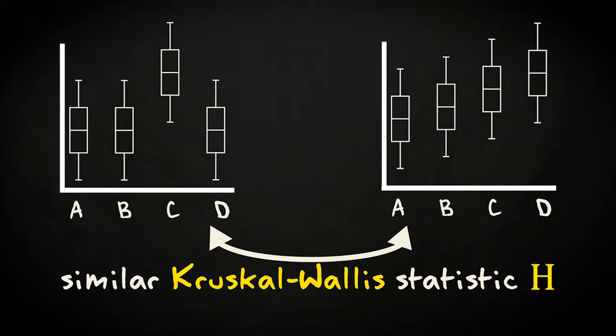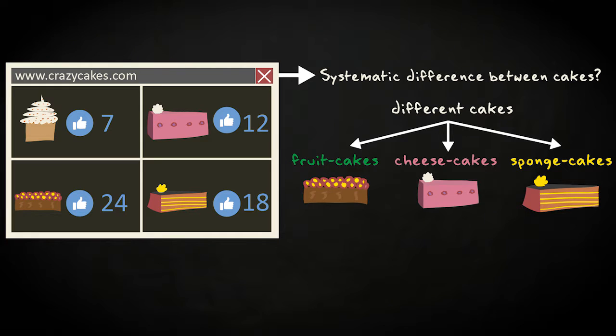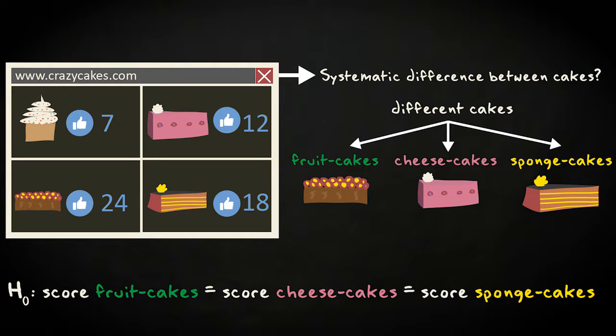Let's apply the Kruskal-Wallis method to an example. The local confectioner has gotten so popular that enthusiastic customers start a fan site and give likes to especially delicious cakes. Now, this gives the confectioner a new tool to see which products are especially appreciated and which aren't. She starts by checking whether there is a systematic difference between the likes for different types of cake in the first place. She has three broad groups: fruit cakes, cheese cakes and sponge cakes. The question is whether the overall appreciation for these three groups is similar.